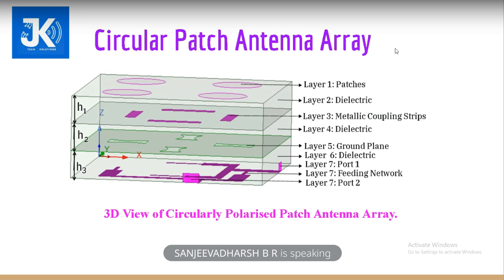In this array, we have four patches and seven layers. The first layer consists of the patch. The second layer is a dielectric substrate — FR4 epoxy. The third layer has metallic coupling strips. The fourth layer is dielectric again. The fifth layer has a ground plane with aperture-coupled feeding. The sixth layer is the same FR4 epoxy dielectric. And the seventh layer is a feeding network consisting of a Wilkinson power divider. There are two ports. This is the 3D view of the circularly polarized patch antenna array.